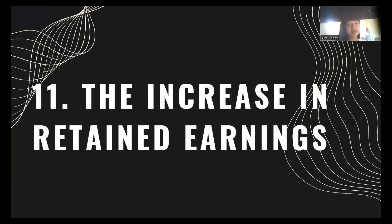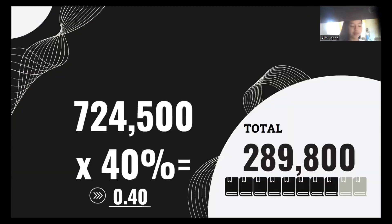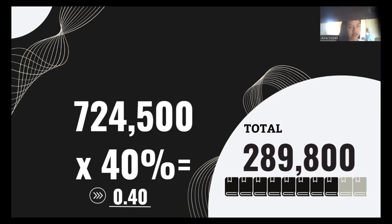Number eleven, the projected net income after tax of 724,500 times the expected retained earnings rate of 40%, which is 0.40, equals 289,800.